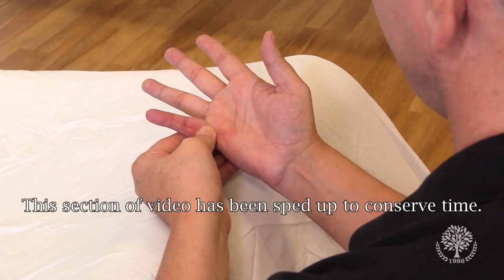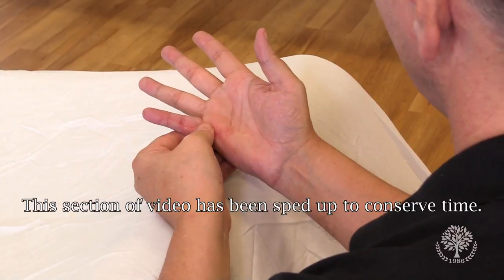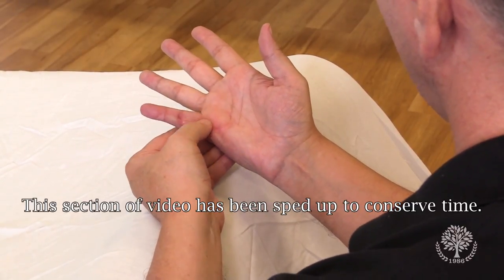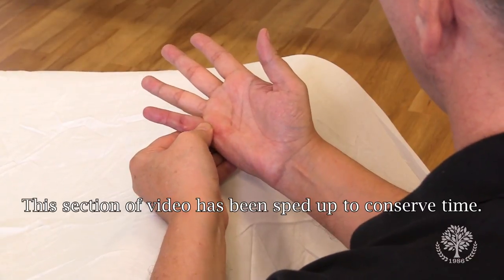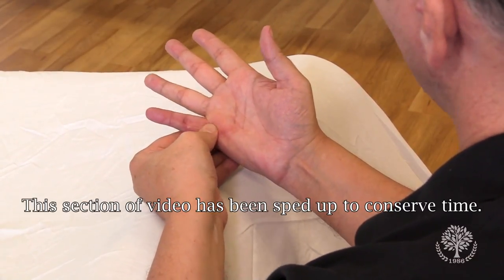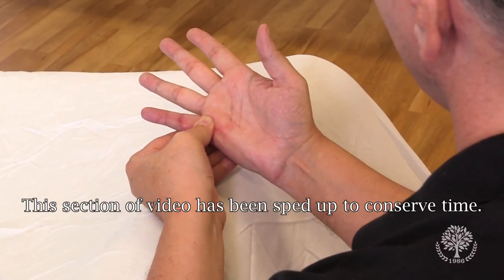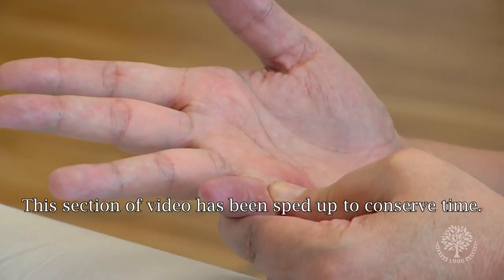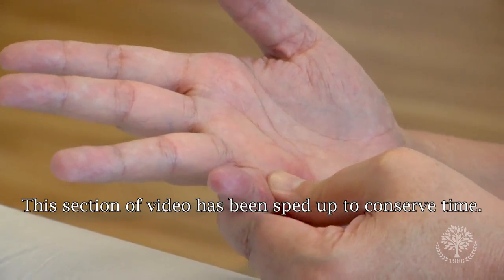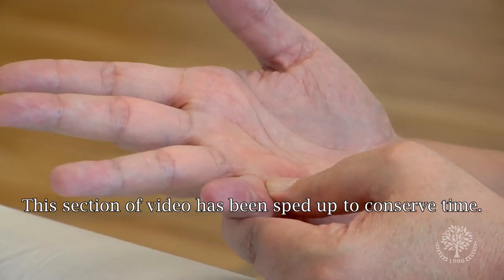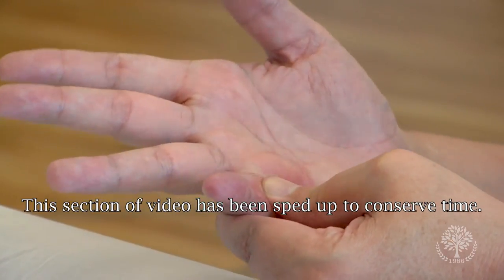I'm going to friction this area because it's the most fibrotic for approximately five minutes. I want to actually see if it's true that I can create a little bit of therapeutic inflammation. So I'm going to go ahead and see if it's possible to get any new tissue that's less fibrotic laid down into this area.